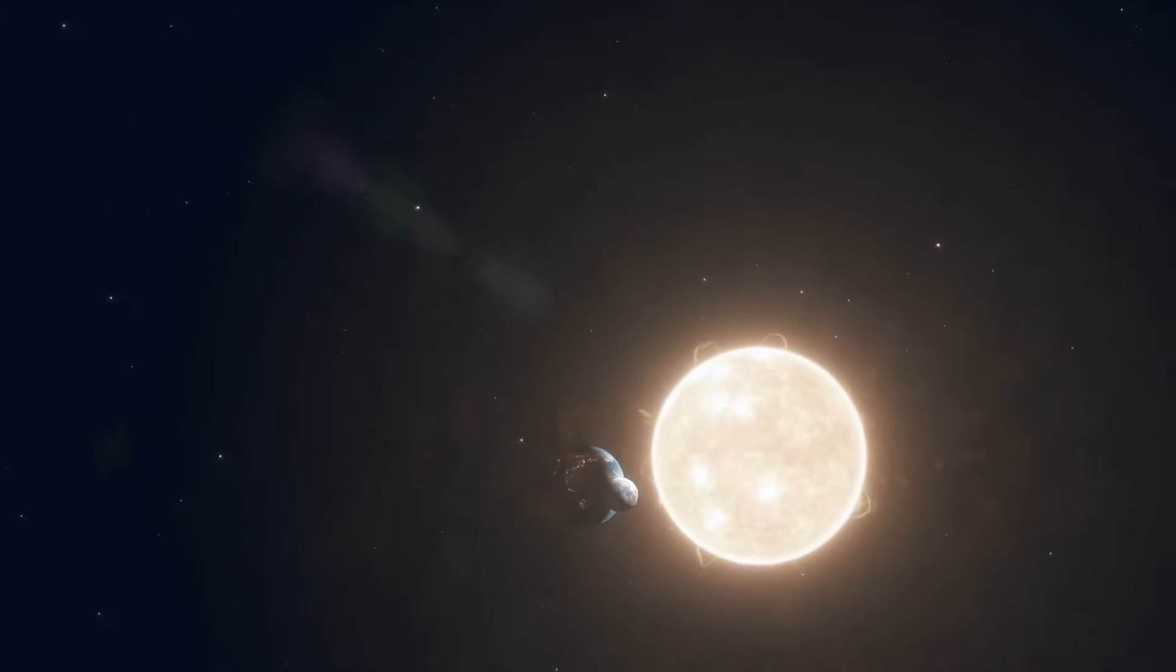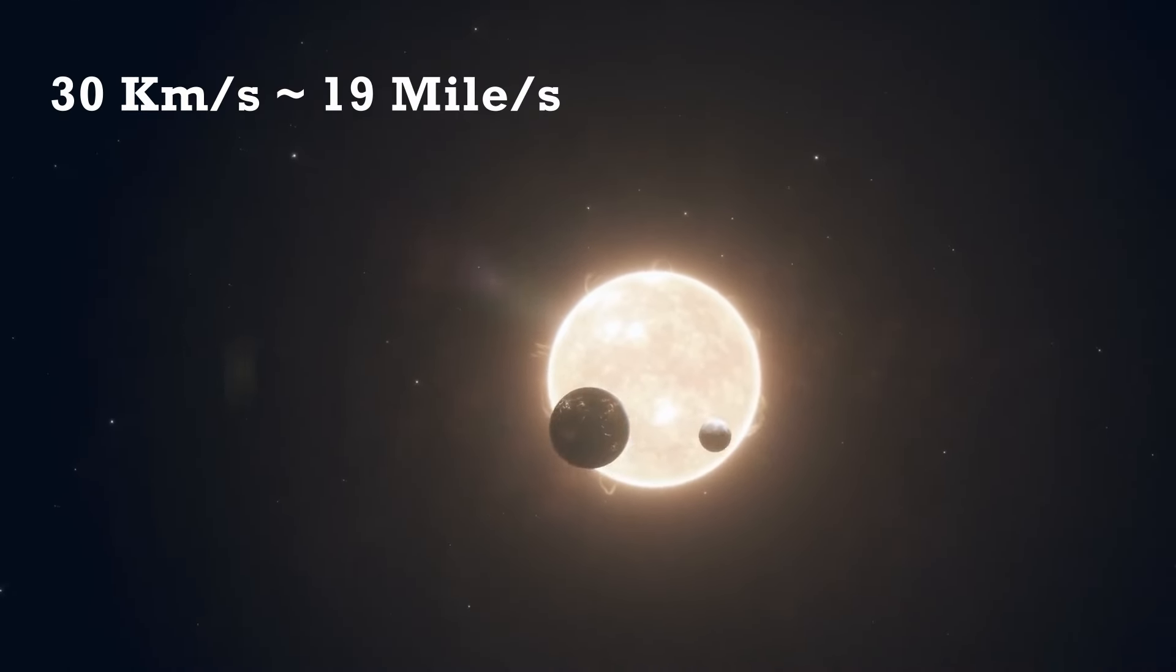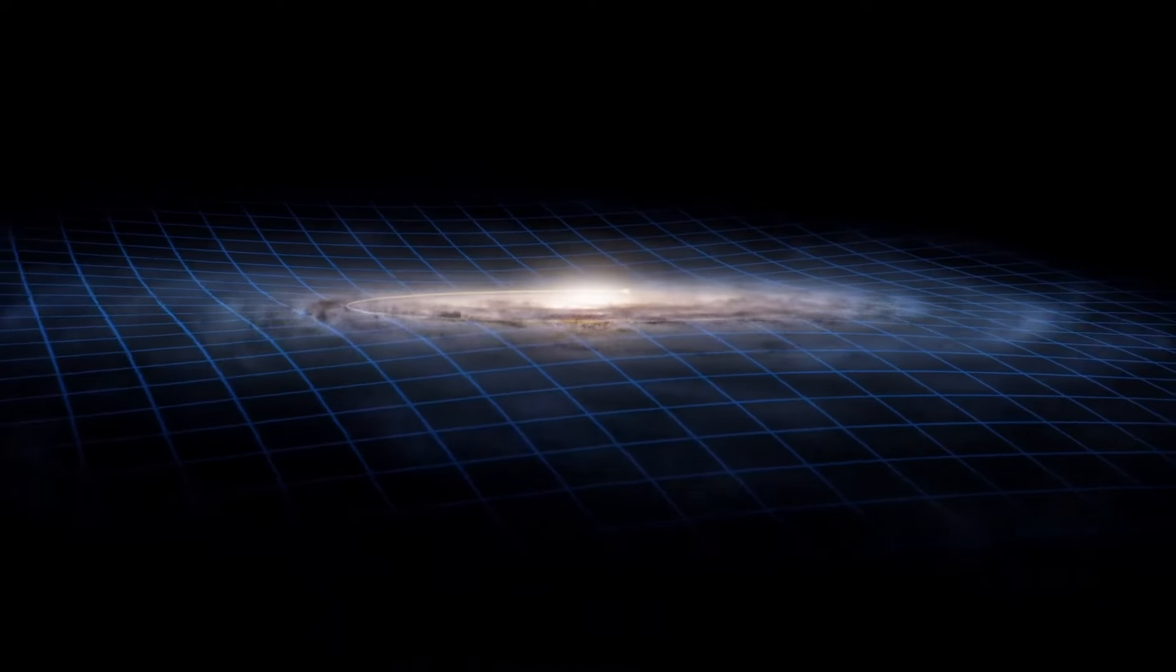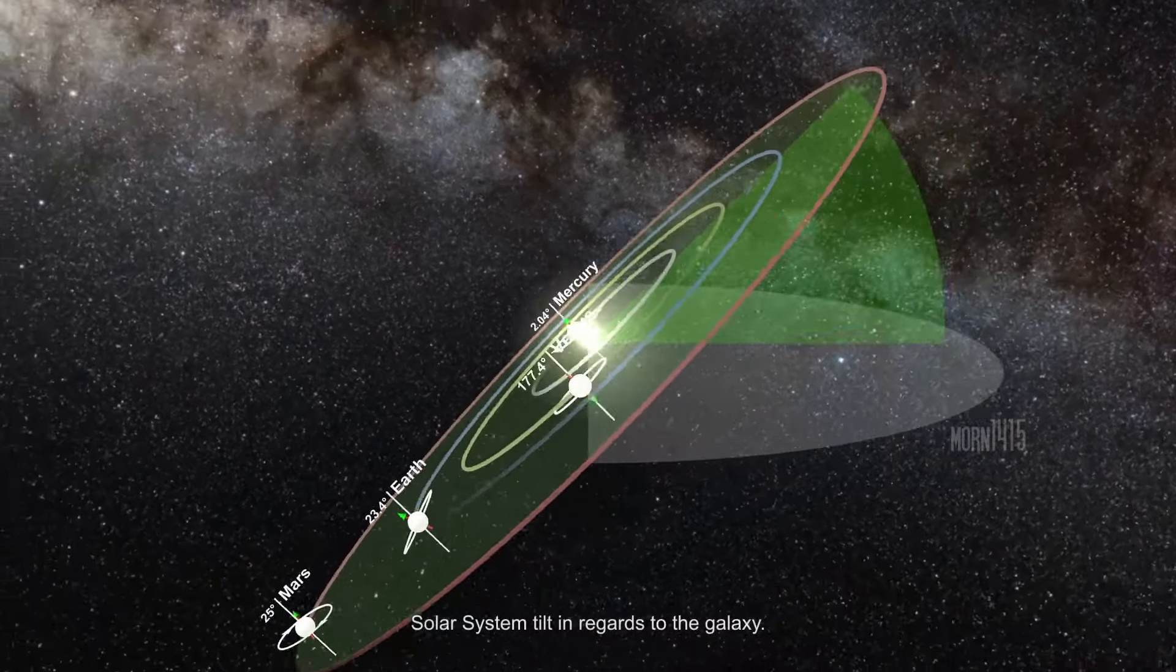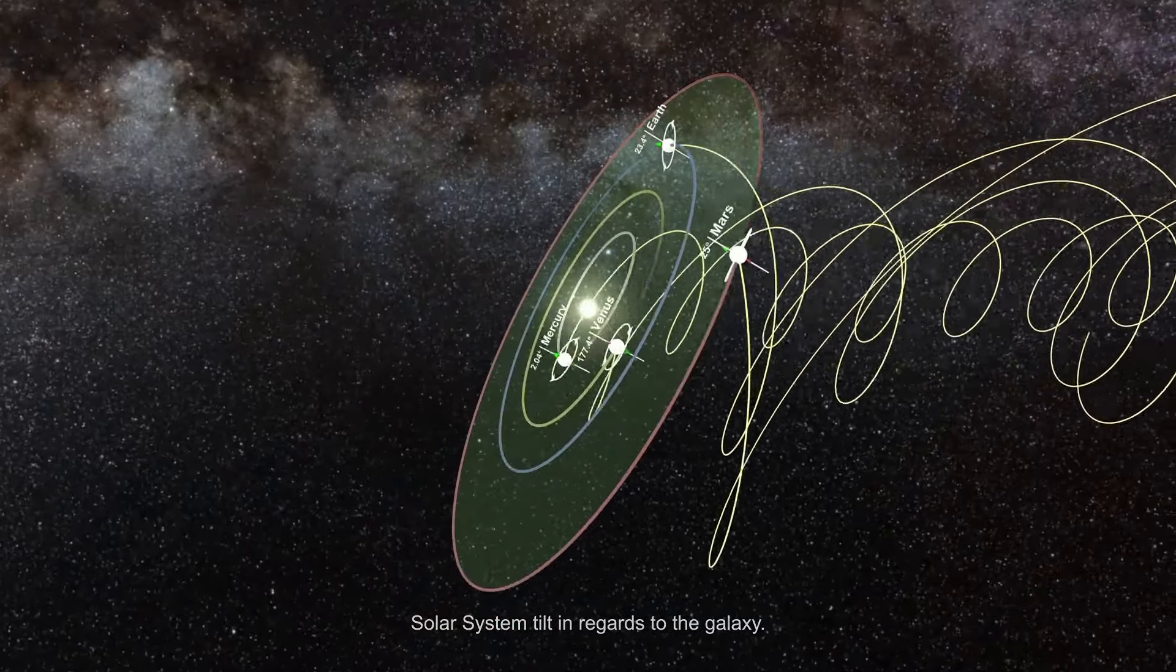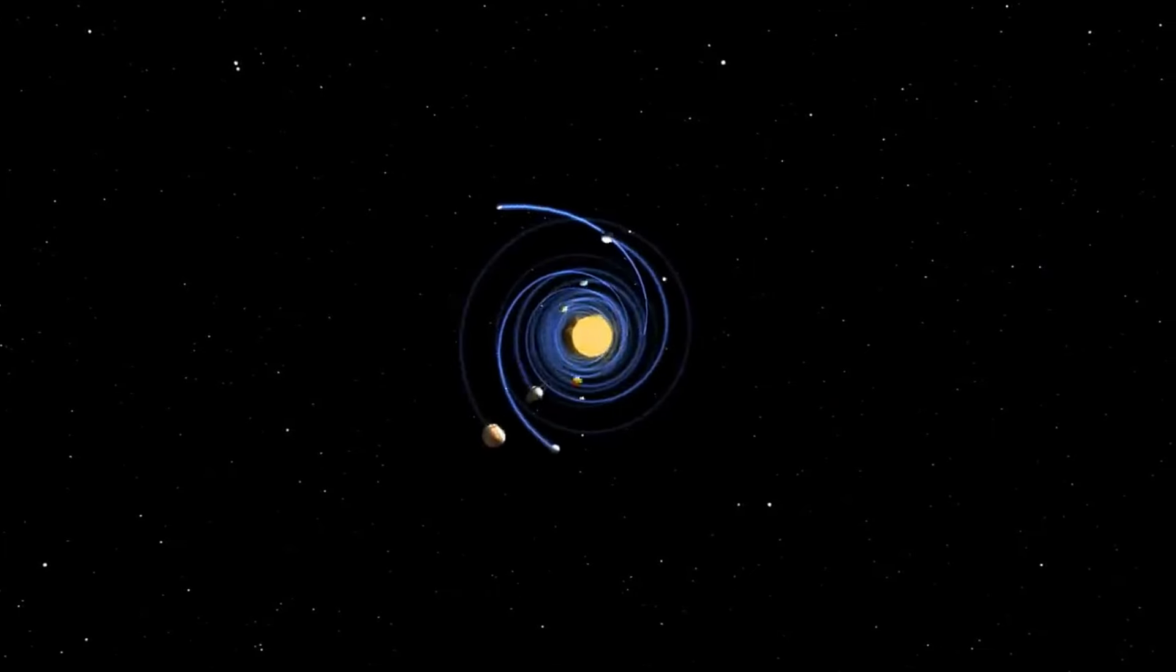While Earth revolves around the Sun at a speed of about 30 kilometers per second, the entire solar system is orbiting the Milky Way galaxy at a speed of about 220 kilometers per second, bringing with it the planets, asteroids, and other objects in our solar system.